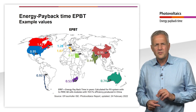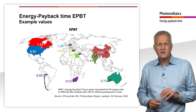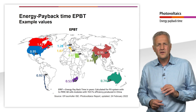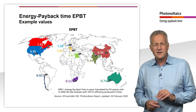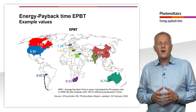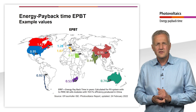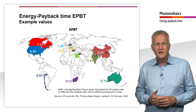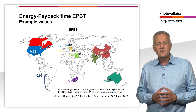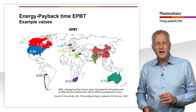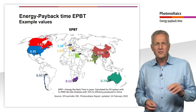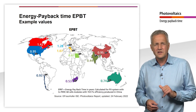In addition, the production location has an impact on energy consumption. If, for example, modules from German production are used for a system in Germany, the transport distances are significantly shorter, which leads to lower energy consumption. Furthermore, less coal-fired electricity is used for production in Europe than in China. As a result, the energy payback time of European-manufactured systems is reduced from 1.28 to 1.16 years for a medium-sized system in Europe, compared to a system manufactured in China.